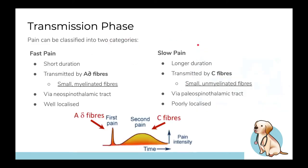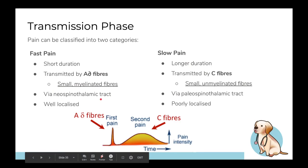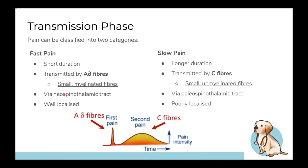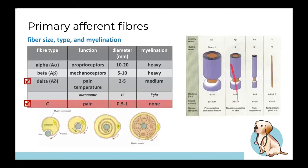In transmission, the main fibers are A-delta and C fibers. Fast pain is short, well-localized, and transmitted by myelinated A-delta fibers. Slow pain is transmitted by unmyelinated C fibers. The corresponding tracts are the neospinothalamic tract for fast pain and the paleospinothalamic tract for slow pain — 'neo' meaning new and fast, 'paleo' meaning old and slow.